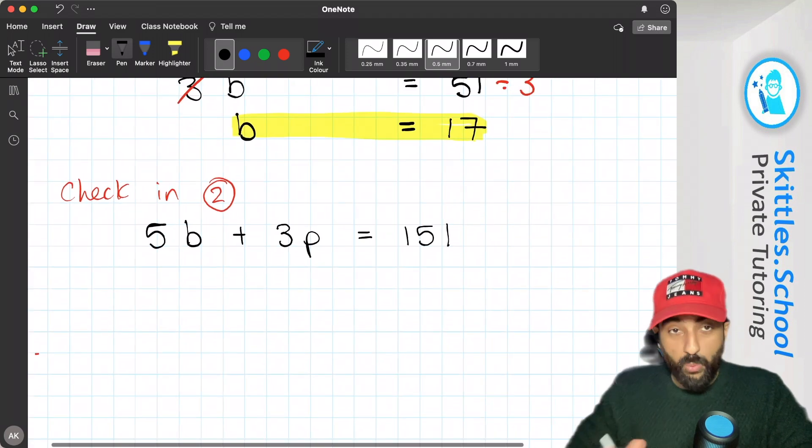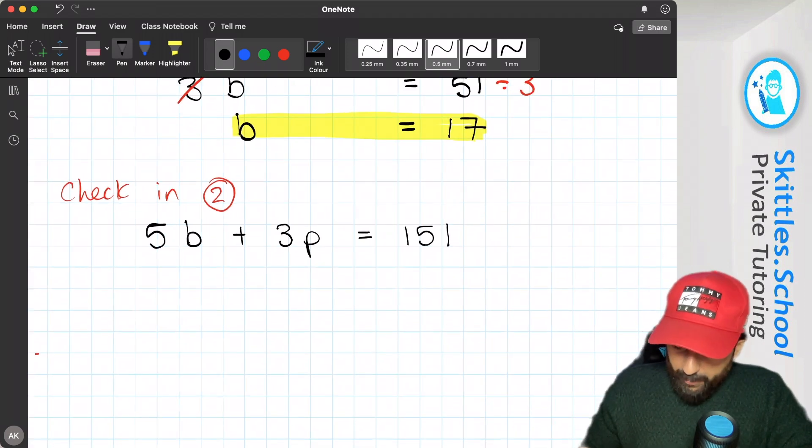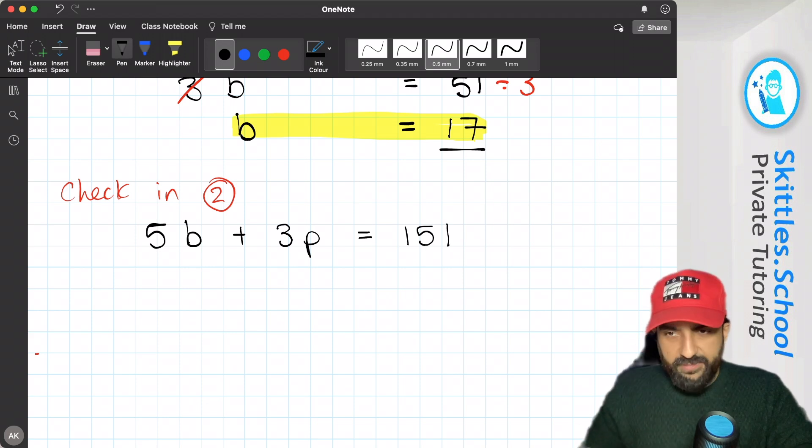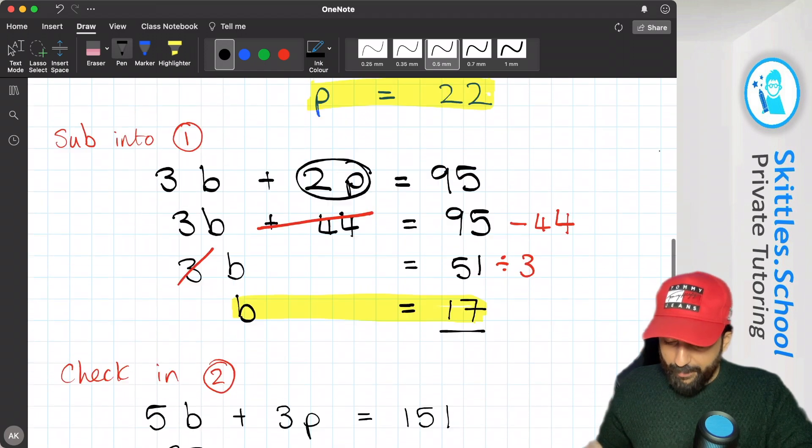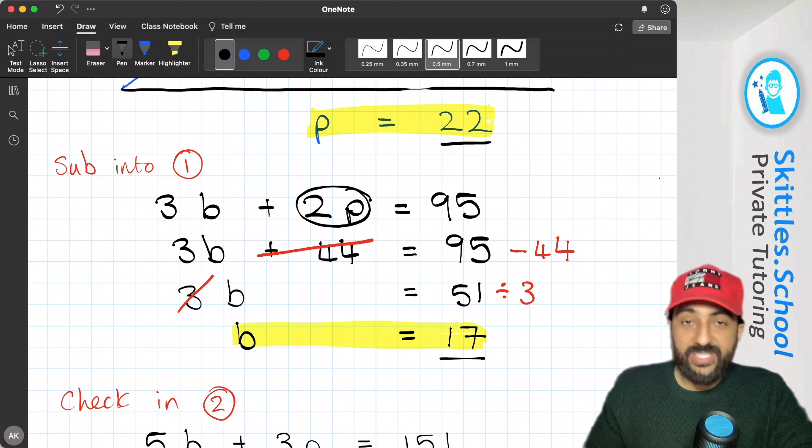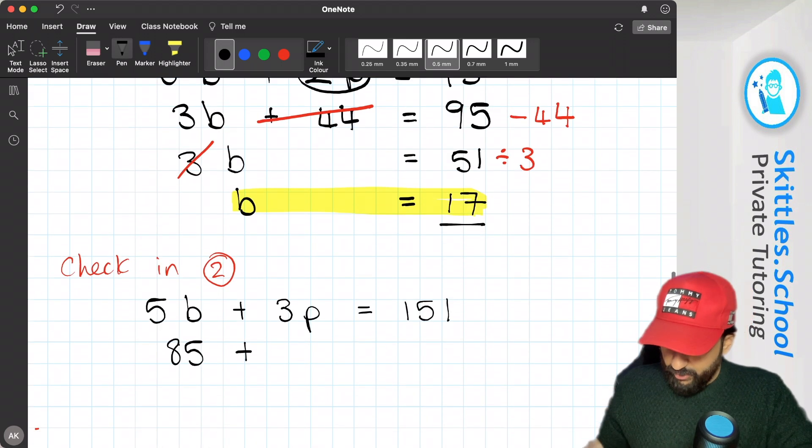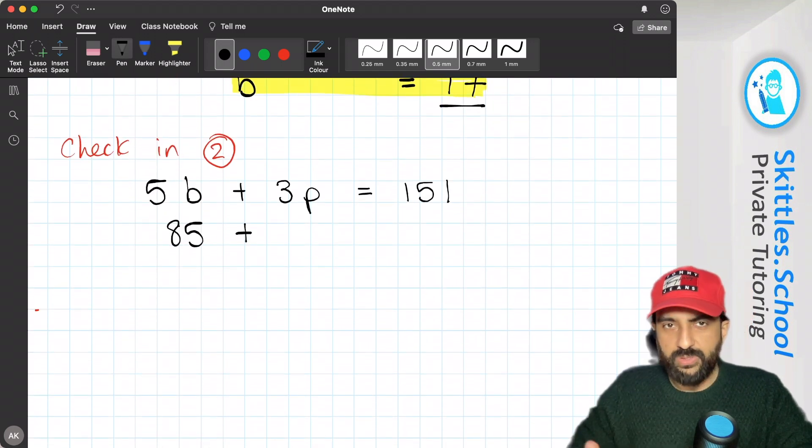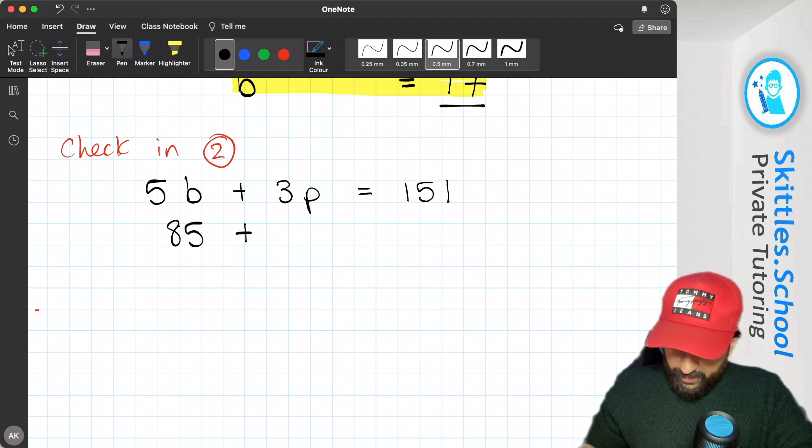So let's start with bananas. Now we know bananas are 17, so let's substitute that in. 5 times 17 is 85. And we know that pears is 22. So 3 times 22 is 66.